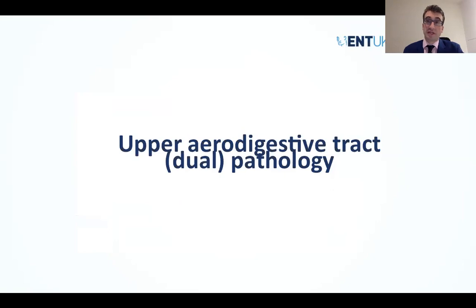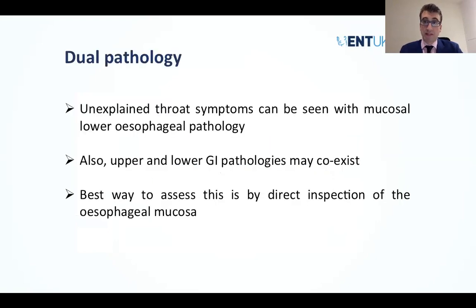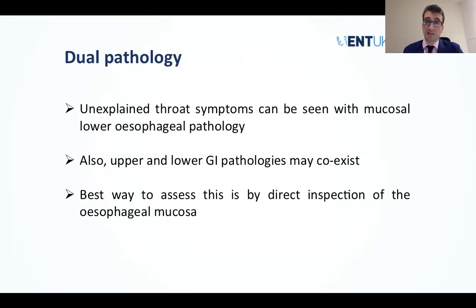Looking at pathology and the concept of dual pathology, which makes TNO very relevant in practice: it's important to understand that unexplained throat symptoms can often be the first presentation of lower esophageal pathology. Many patients with serious disease in the distal esophagus, including adenocarcinomas, may first present with non-specific symptoms in the laryngopharynx. The best way to assess mucosal disease is endoscopically — to directly visualize and perform biopsies — and for early disease, endoscopy is the optimal first investigation.